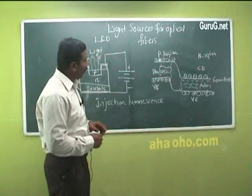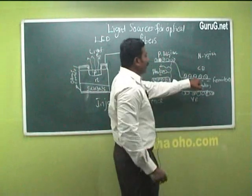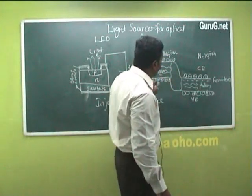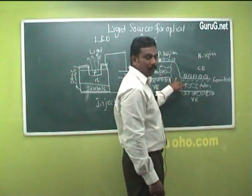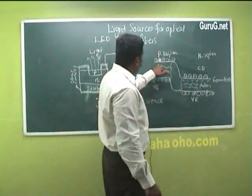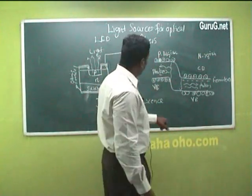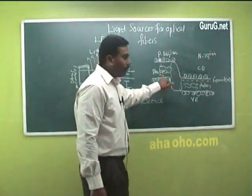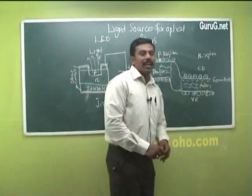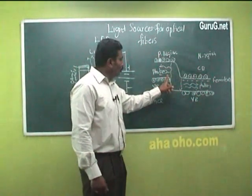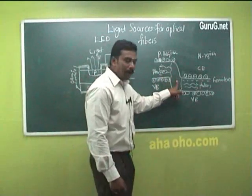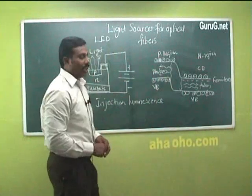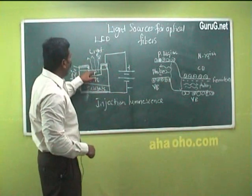When the diode is forward biased, the majority carriers in the N region — electrons — and the majority carriers in the P region — holes — cross the junction. The electrons become excess minority carriers in the P region, and the holes become excess minority carriers in the N region. At the junction, these minority carriers diffuse and recombine with the majority carriers in the N and P regions respectively, producing light photons at the junction. The light energy is emitted from the P region.